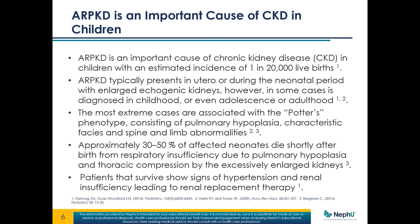It can also present in adolescence or even adulthood. The most extreme cases are associated with something called Potter's phenotype, which consists of pulmonary hypoplasia, characteristic facies, and spine and limb abnormalities. Potter's phenotype is actually seen in all cases of severe kidney disease in utero, because the amniotic fluid is actually urine. So if the kidneys aren't working, they can't make the amniotic fluid — you get oligohydramnios, which leads to Potter's syndrome.